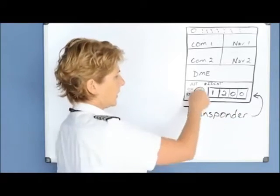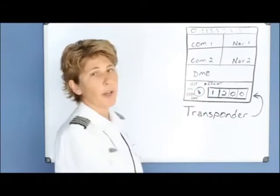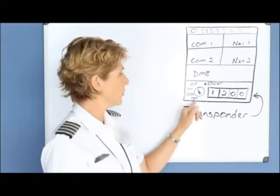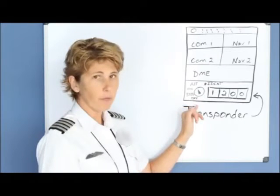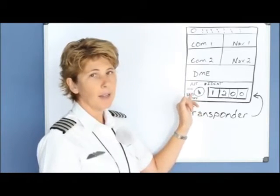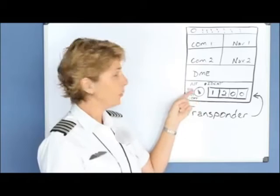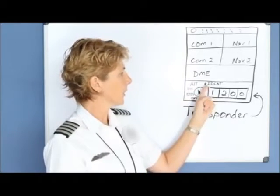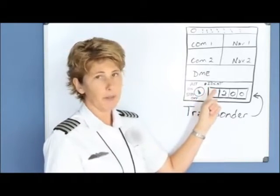The transponder also has a selector knob on it, and the selections you can choose would be: off, standby, on, altitude, and there is also an ident button.